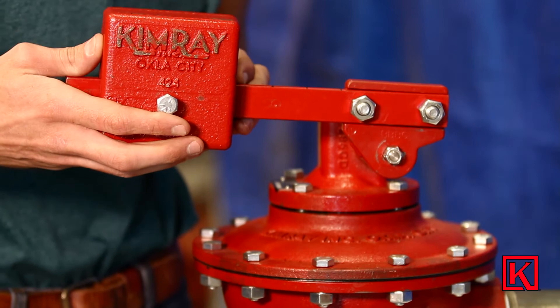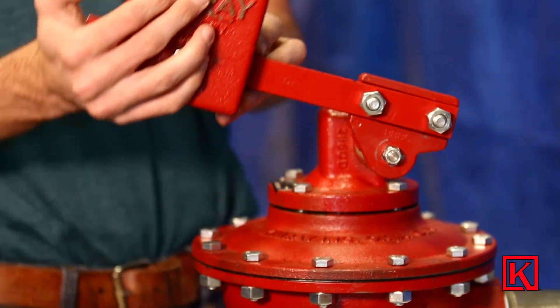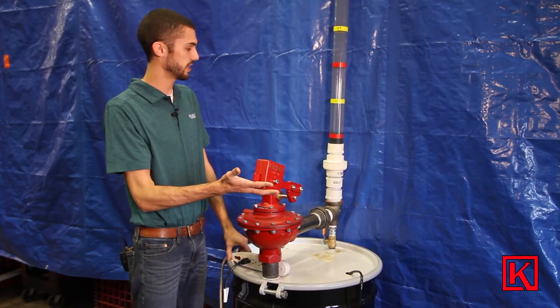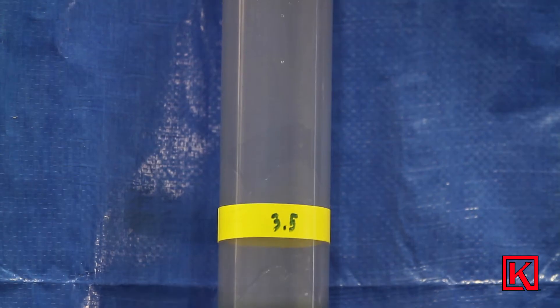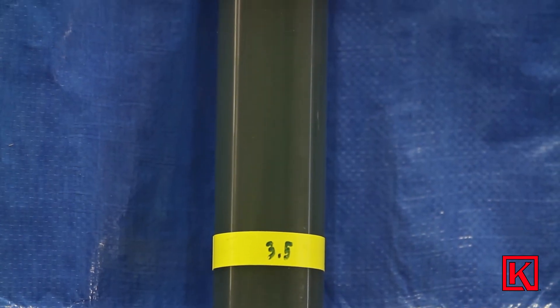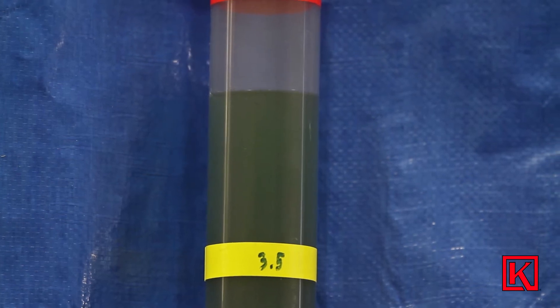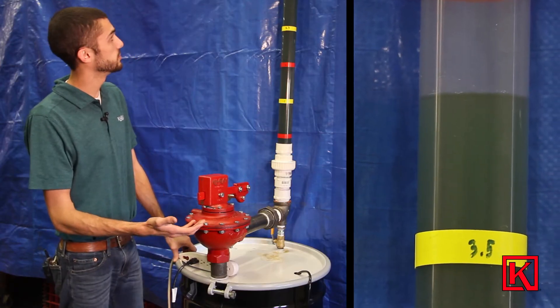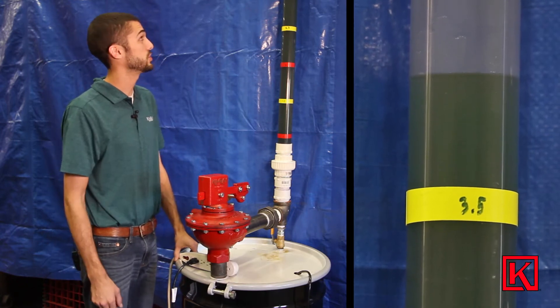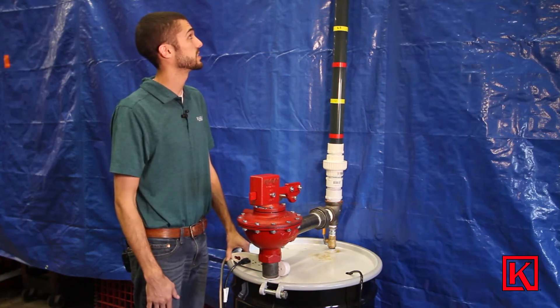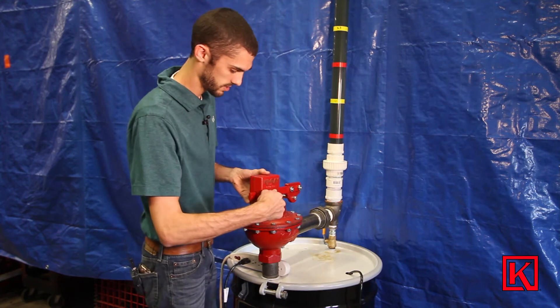We'll see how that changes the liquid head height. Dump out all the liquid, turn on the pump again. Now it's holding just about three and a half feet. Just moving it in an inch changed it about six inches.